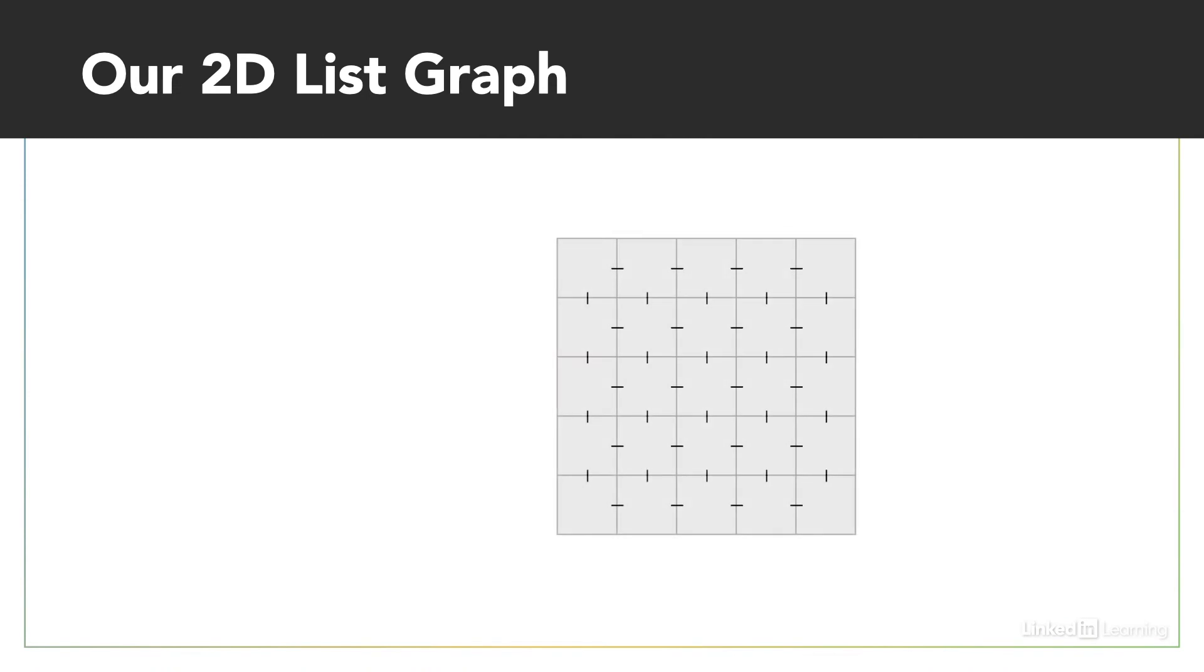Now this gives you an idea of how we're going to represent this graph in a 2D list. So we have each of the cells is going to be a node, and the nodes are going to be connected by edges.